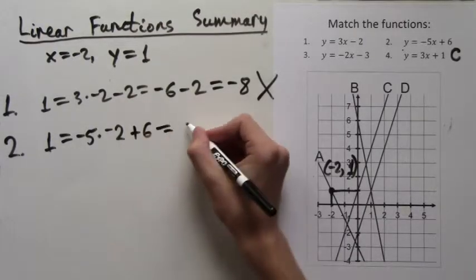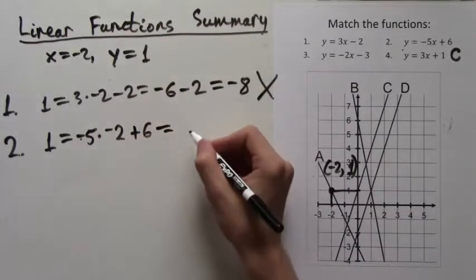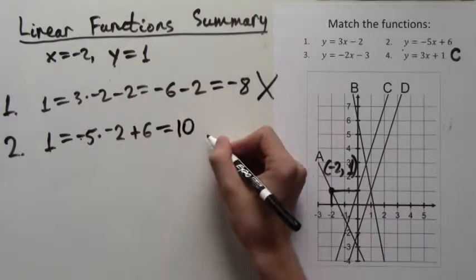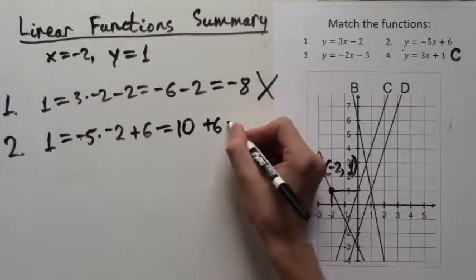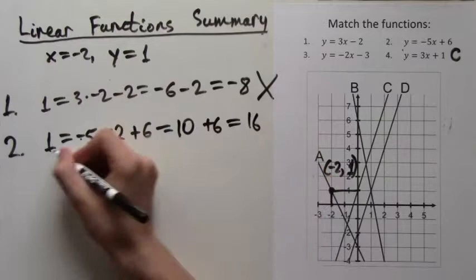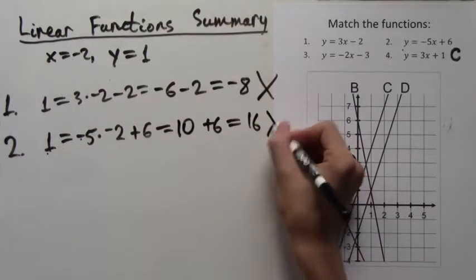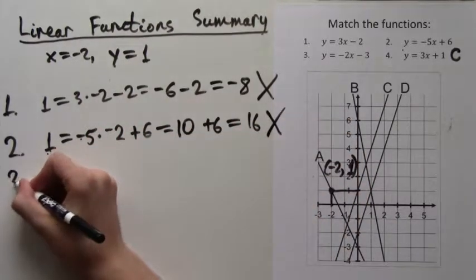We get positive 10 because two negatives cancel out and make a positive, and plus 6. And this equals 16. 1 does not equal 16, so it can't be formula 2.